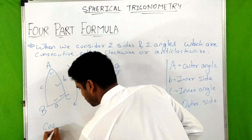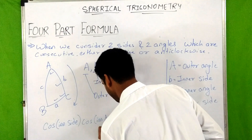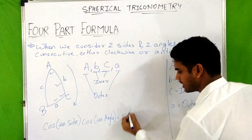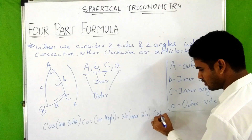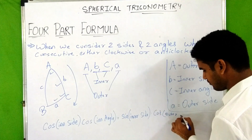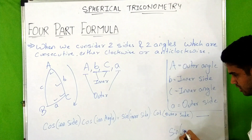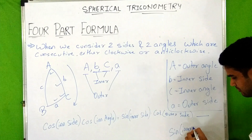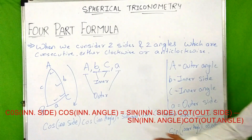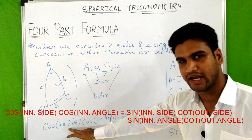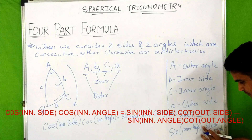Now, what is the four part formula? The formula is: cos(inner side) × cos(inner angle) = sin(inner side) × cot(outer side) − sin(inner angle) × cot(outer angle).